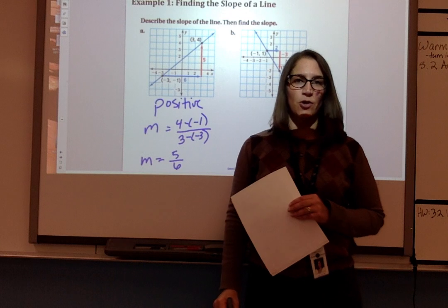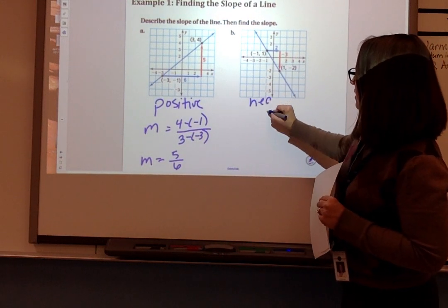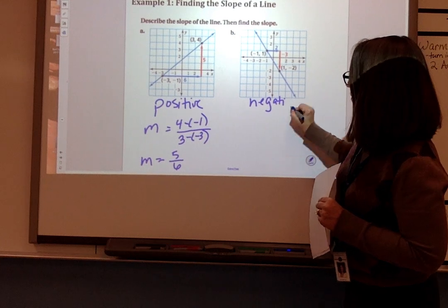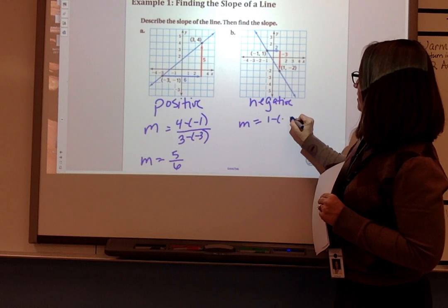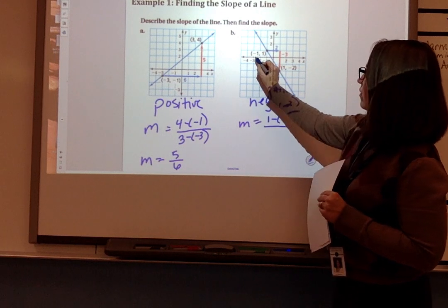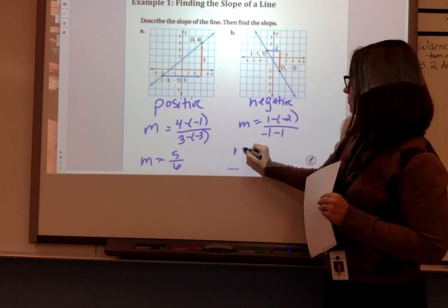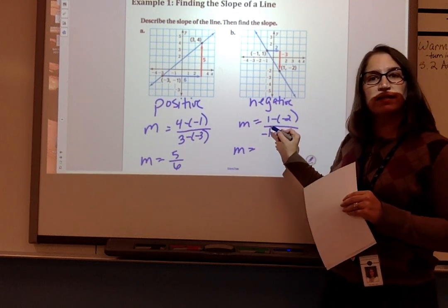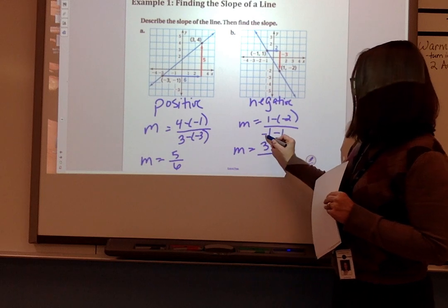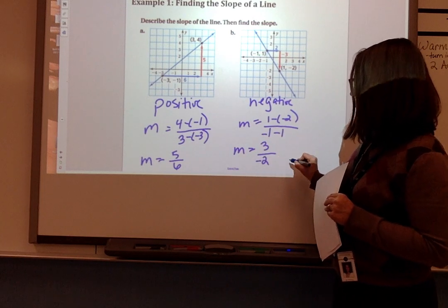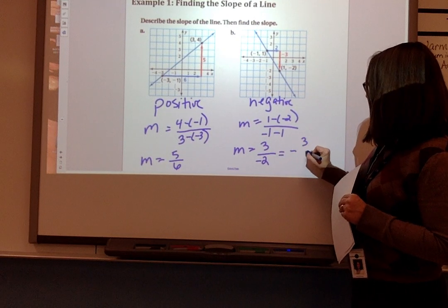So this is a positive slope and it's 5 sixths. For b, we can tell by looking at it that it's a negative slope and we can calculate the slope by doing 1 minus negative 2 over negative 1 minus 1. 1 minus negative 2 is 3, and negative 1 minus 1 is negative 2. So 3 over negative 2, which we'll say is negative 3 halves.